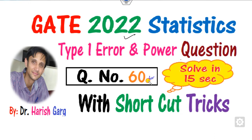Today we will discuss question number 60, which is related to Type 1 error and the power test. We will solve this question within 15 seconds so that you may understand how you can apply this in future examinations.